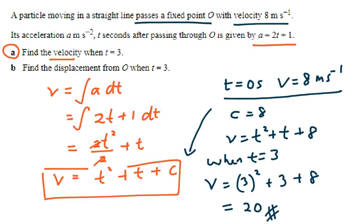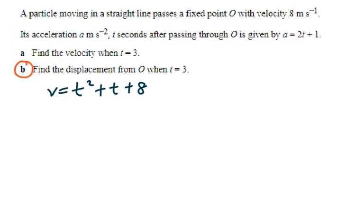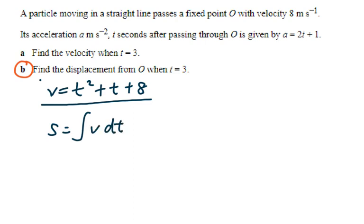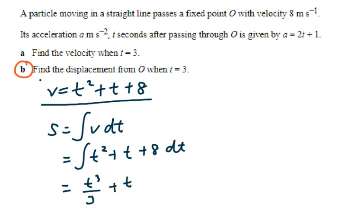Alright, we have solved part A. Now let's move on to part B. For question part B, you are required to find the displacement from O when t is equal to 3. From the previous equation, we have velocity equal to t squared plus t plus 8. To get the displacement equation, what you need to do is integration of velocity with respect to time. Hence, we will be integrating t squared plus t plus 8 with respect to time. The integral of the velocity will be t to the power of 3 over 3 plus t squared over 2 plus 8t plus c.